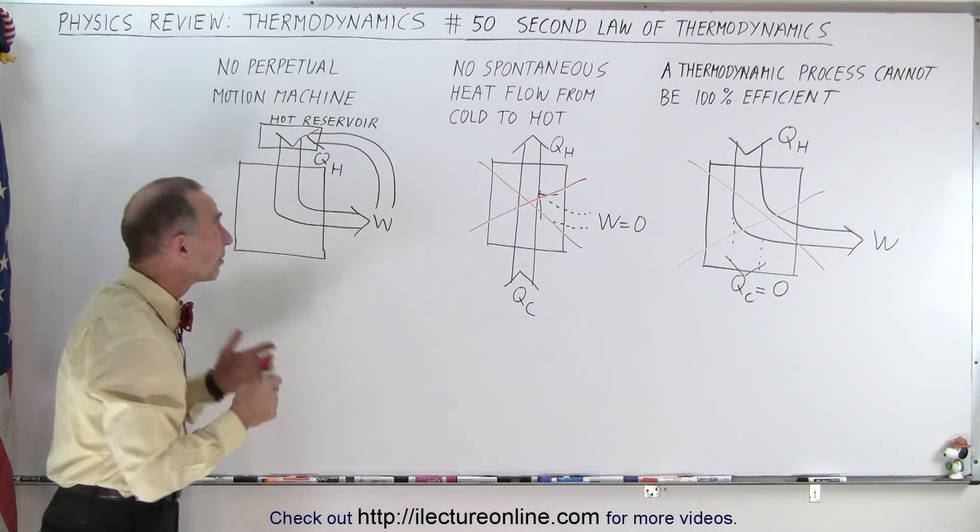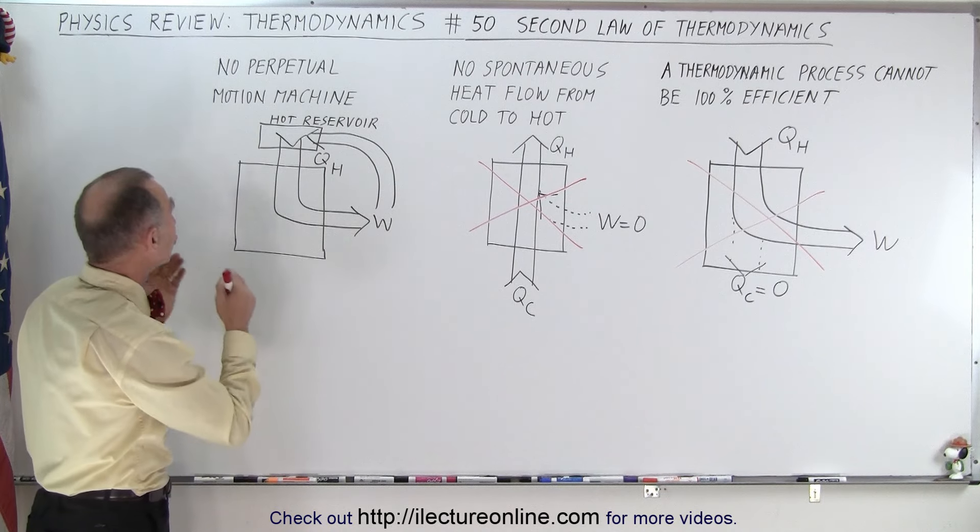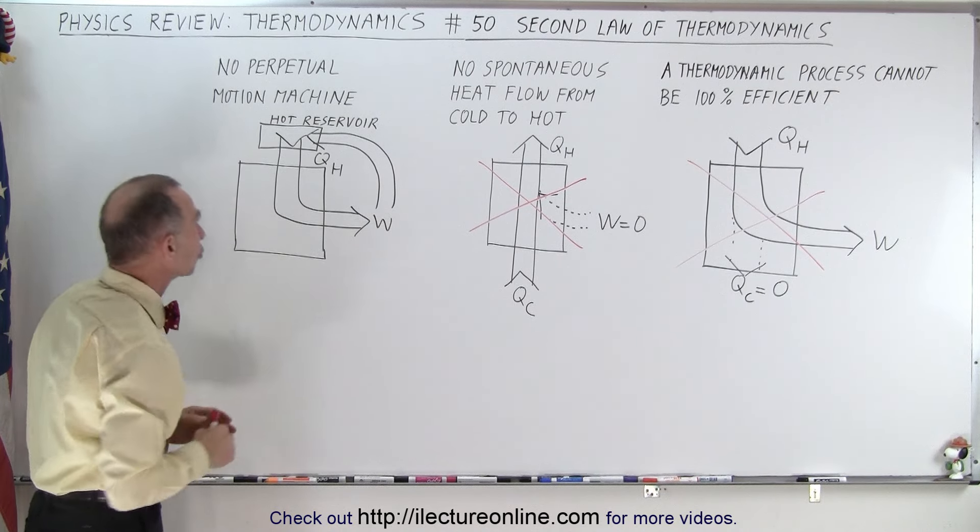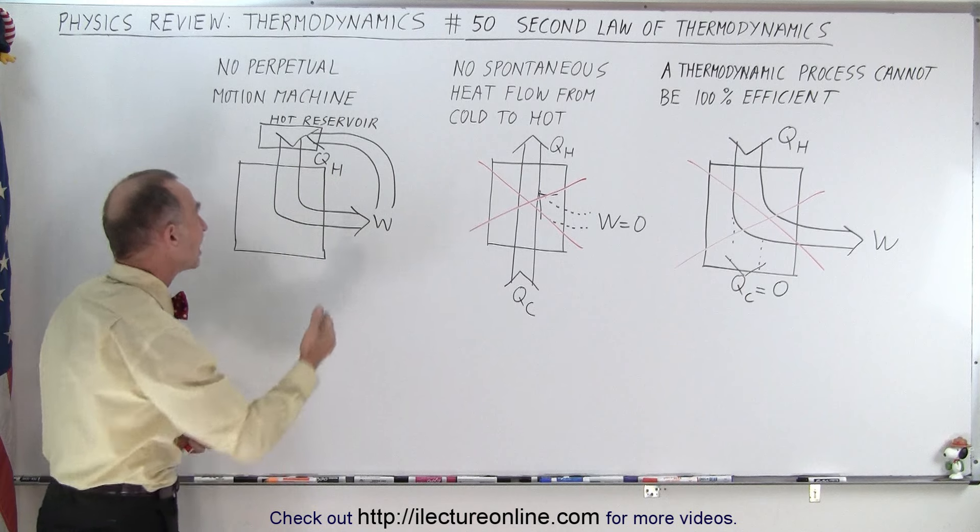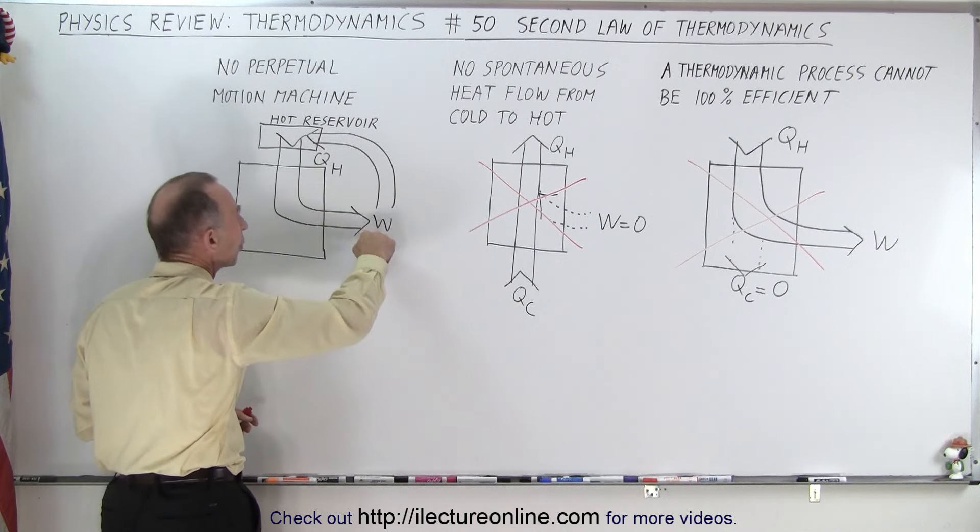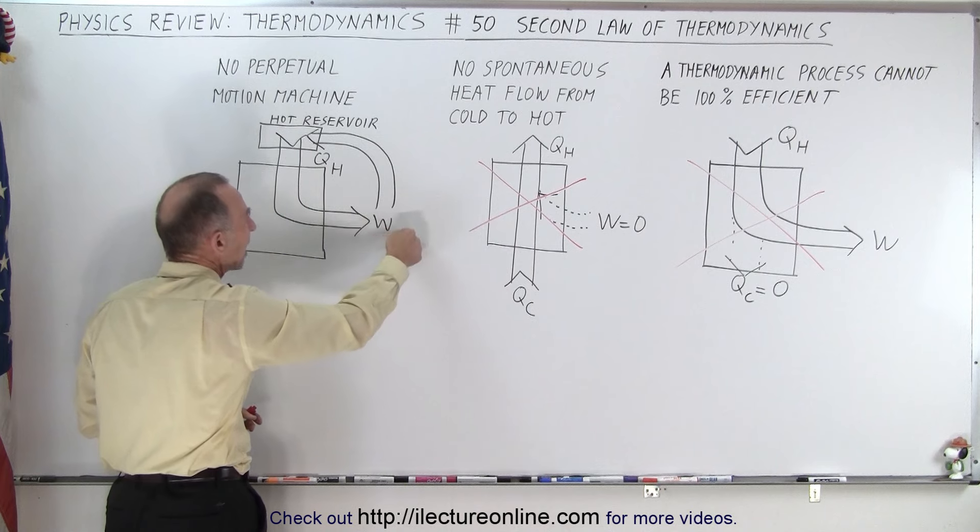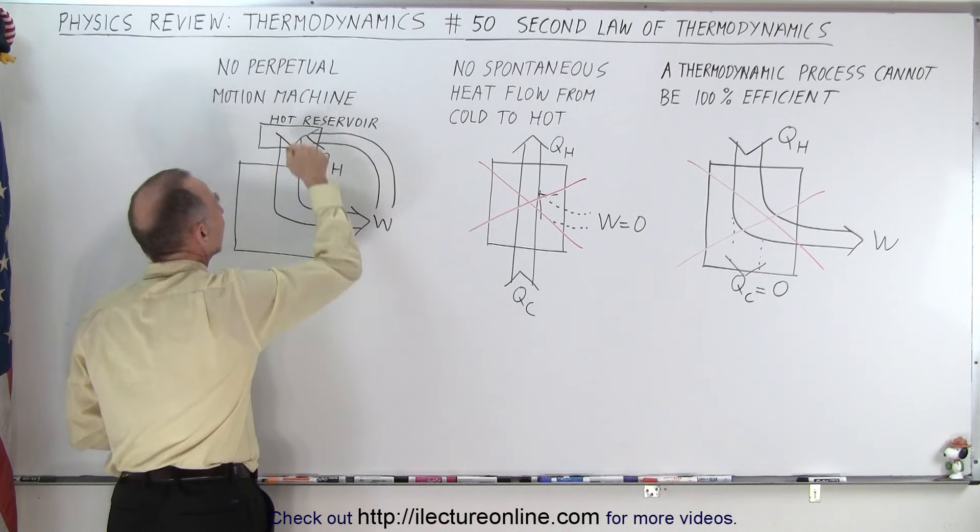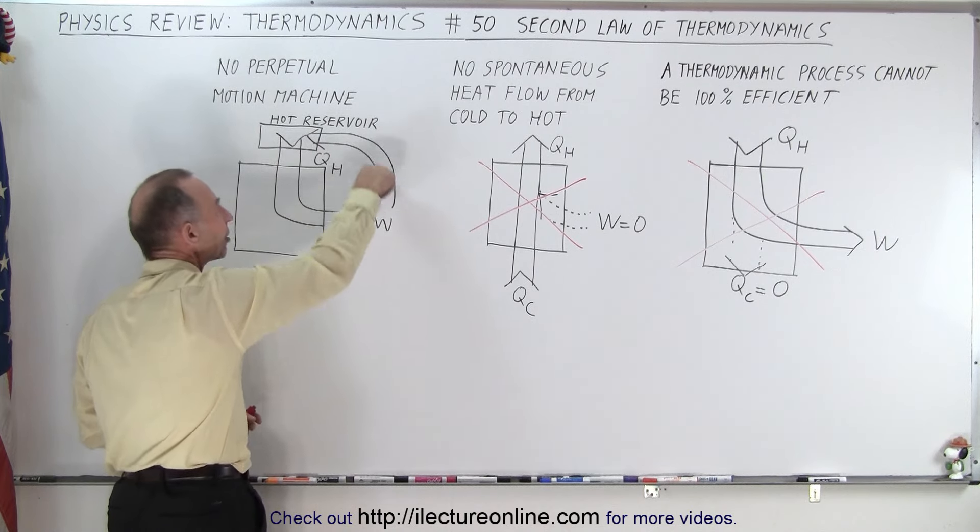The third way to look at the second law of thermodynamics is that there's no such thing as a perpetual motion machine. You cannot have heat coming from a hot reservoir, convert it completely into work, and then take that work, convert it back into heat, and put it back into the hot reservoir without any loss of energy.